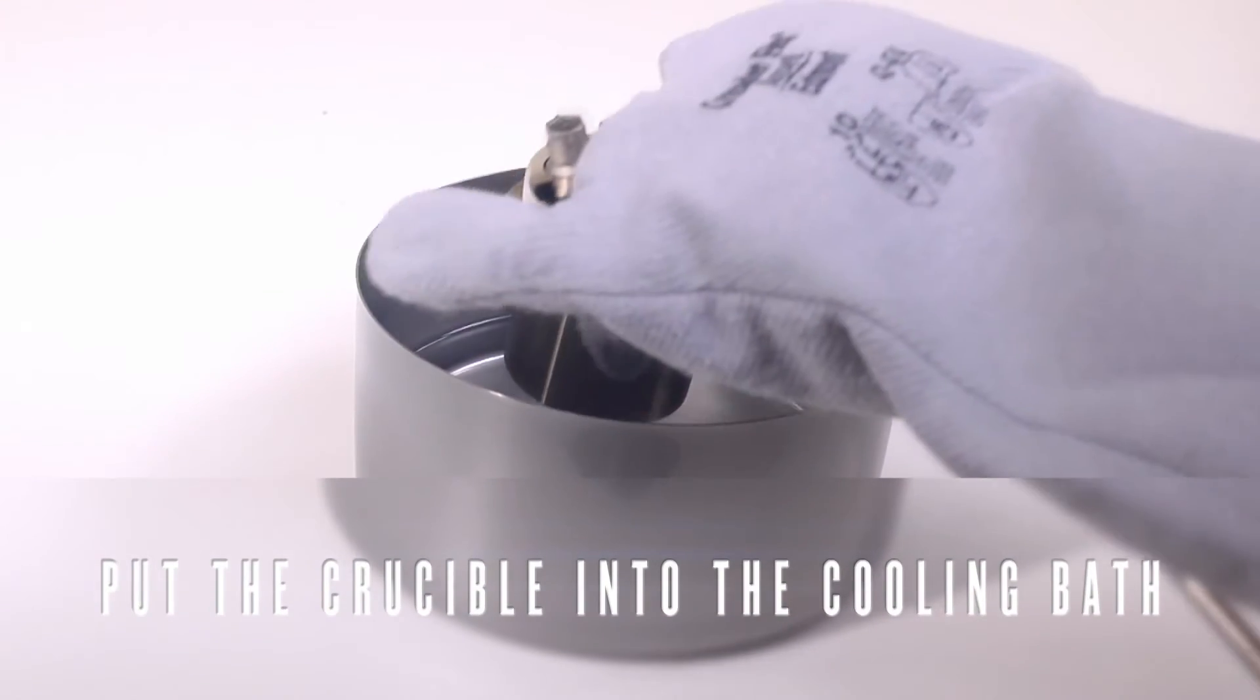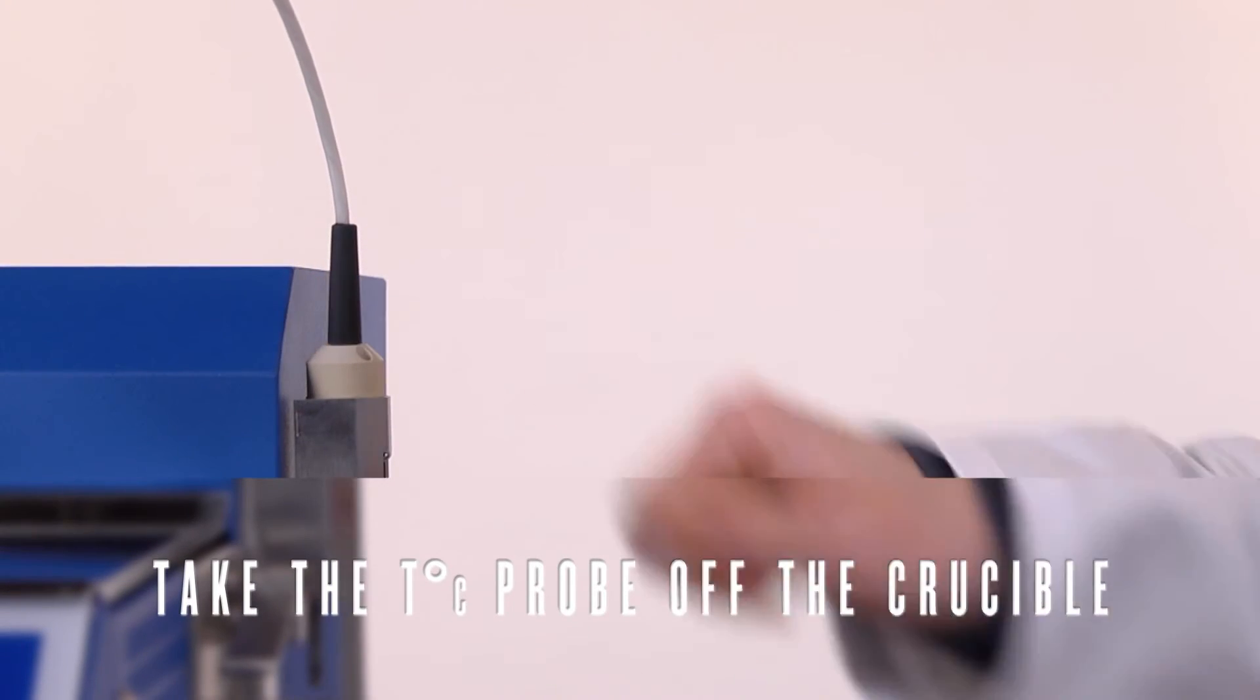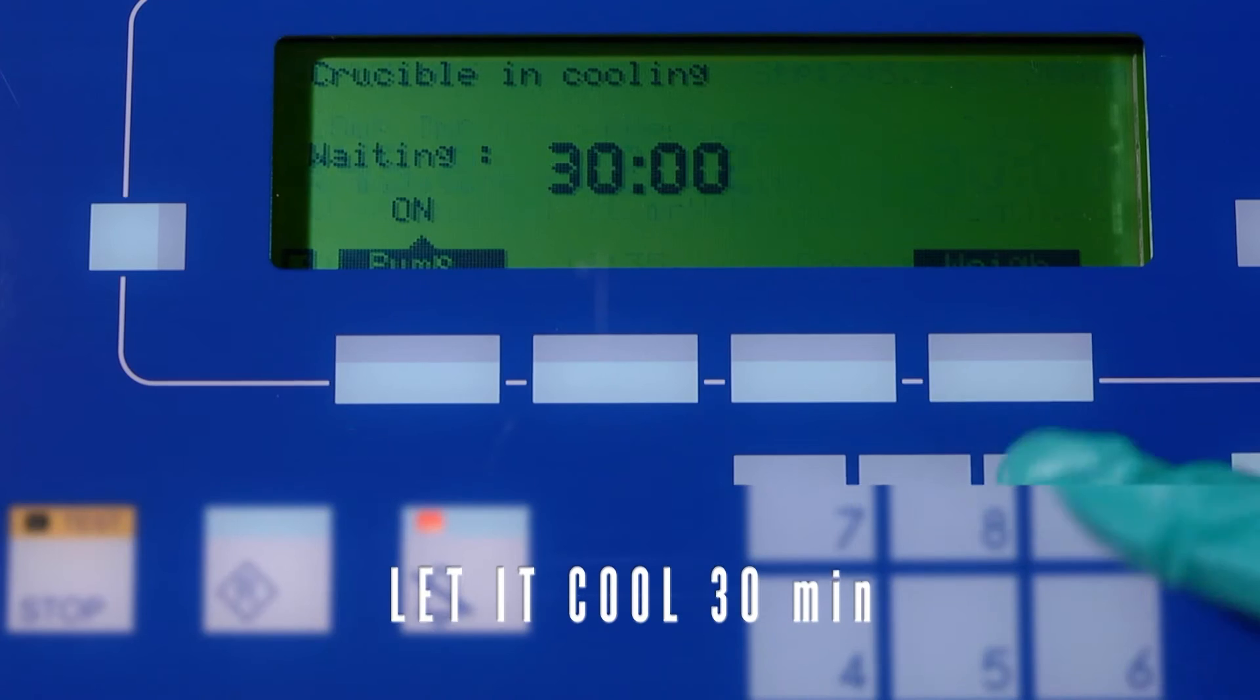Place the crucible with the temperature probe in the cooling bath. Remove the probe and let the crucible cool down at least 30 minutes.